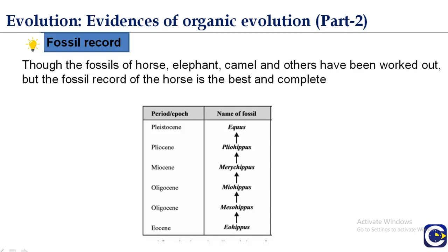The fossil records of many animals are present today, but the fossil record of the horse is the most complete and best known. These records span different geological periods showing the different forms of the horse, from early forms through to the most advanced form of the modern horse, with key specimens found in the Miocene and Eocene periods in Germany.